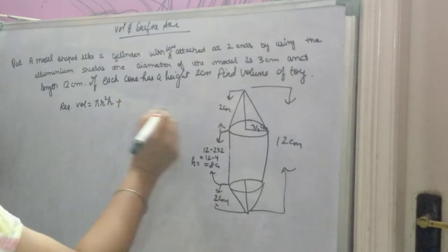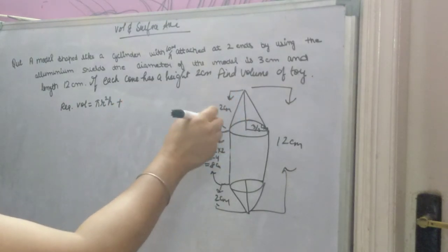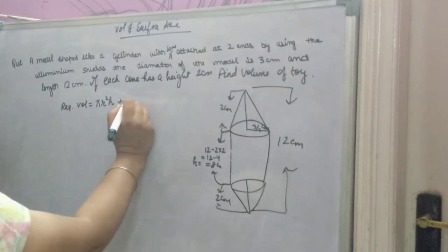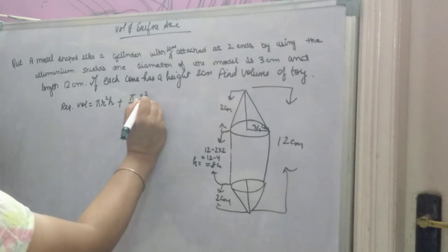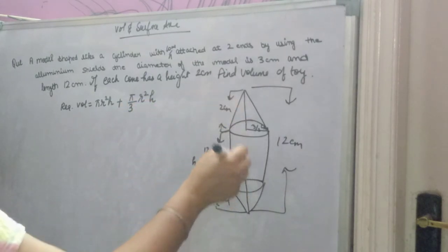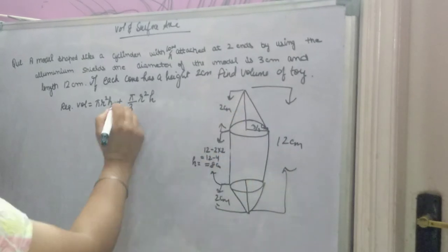plus the volume of the cones. Volume of a cone is 1 by 3 pi r square h. Now, 2 cones are there, so here you will multiply by 2 also.